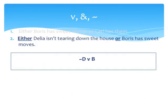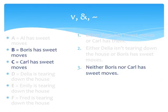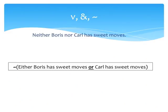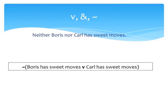Now for sentence 3: 'Neither Boris nor Carl has sweet moves.' This sentence is basically the negation of 'Either Boris or Carl has sweet moves.' So our first step is: this is 'Either Boris or Carl has sweet moves' preceded by a tilde — or what is the same, it's not the case that either Boris has sweet moves or Carl has sweet moves. The main connective in the sentence in parentheses is EITHER...OR, meaning the two component sentences are joined by a V. We simply substitute each of the disjuncts by its corresponding letter, and this is the end result.